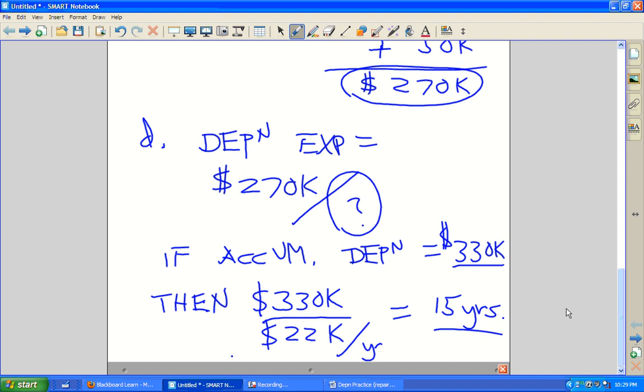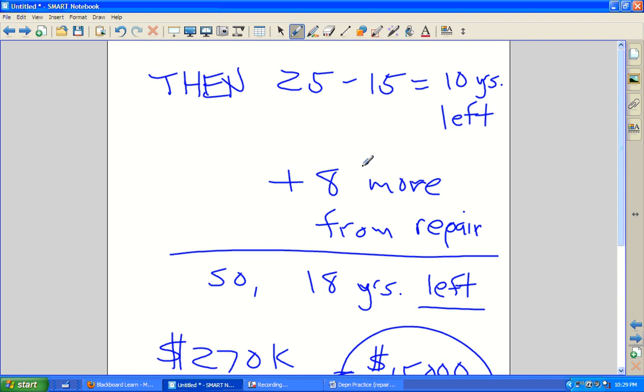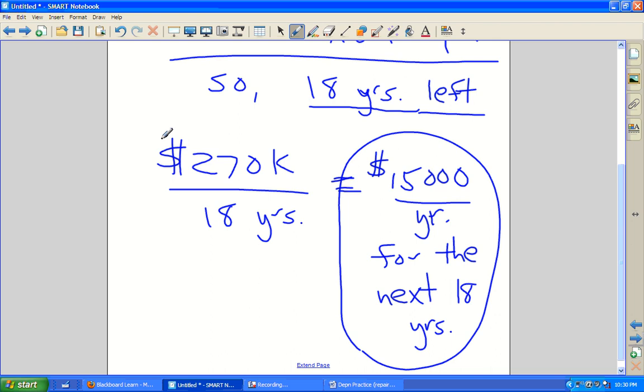What happens next is if I say 25 years of life minus 15 years in means we have 10 years left for depreciation. But wait, didn't the repair make this go longer for 8 more years? So I really have 18 years left. So all I have to do now at the end is I have to go $270,000. That's the book value. Remember, it was $220,000 plus $50,000 for the repairs makes $270,000. Now I divide by the 18 years that remain. We had 10 years without the repair. The repair added 8 more years, so it's 18 years. Do the math. You get $270,000 divided by 18. It's $15,000 per year for the next 18 years. Now, we have to figure this out because that should work.